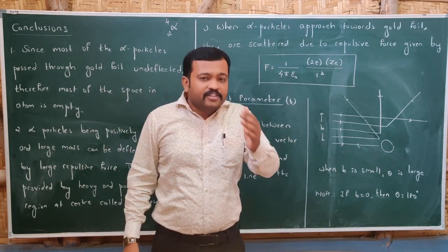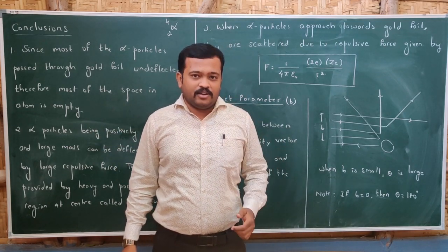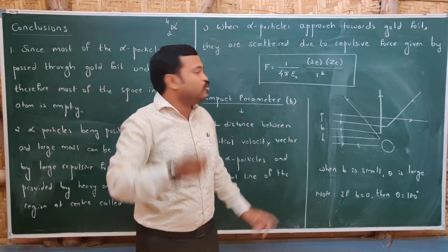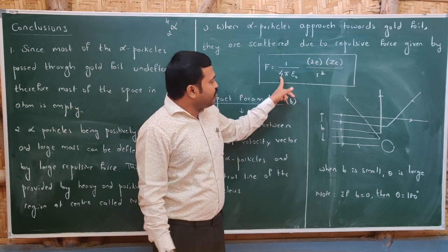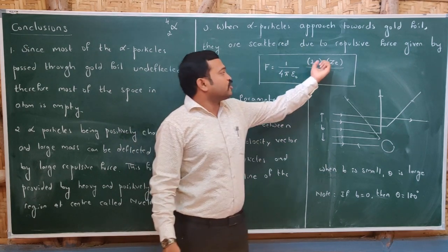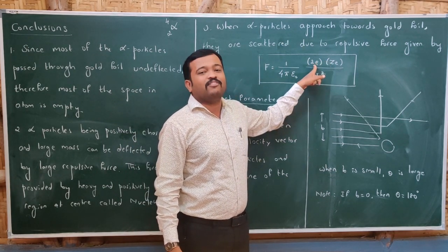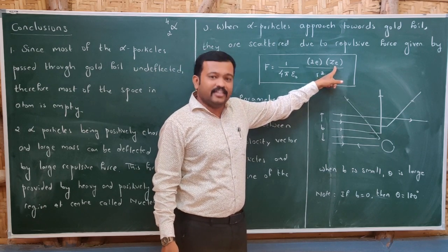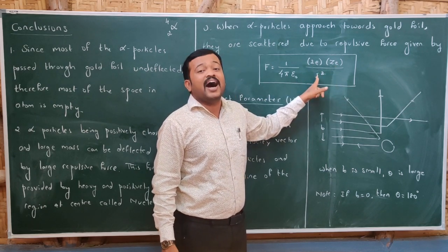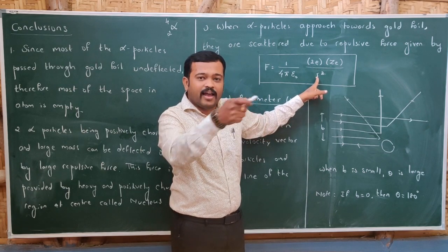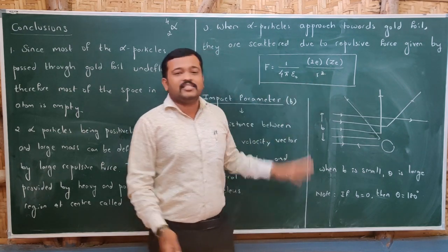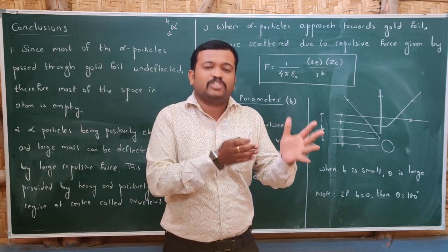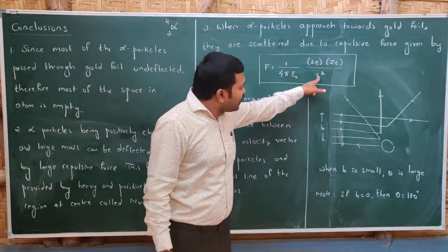The third conclusion: when alpha particles approach the gold foil, they are deflected by a large repulsive force given by Coulomb's law — F = (1 / 4πε₀) × (2e × Ze) / r², where 2e is the charge of the alpha particle, Ze is the charge of the nucleus, and r is the distance between the alpha particle and the nucleus.